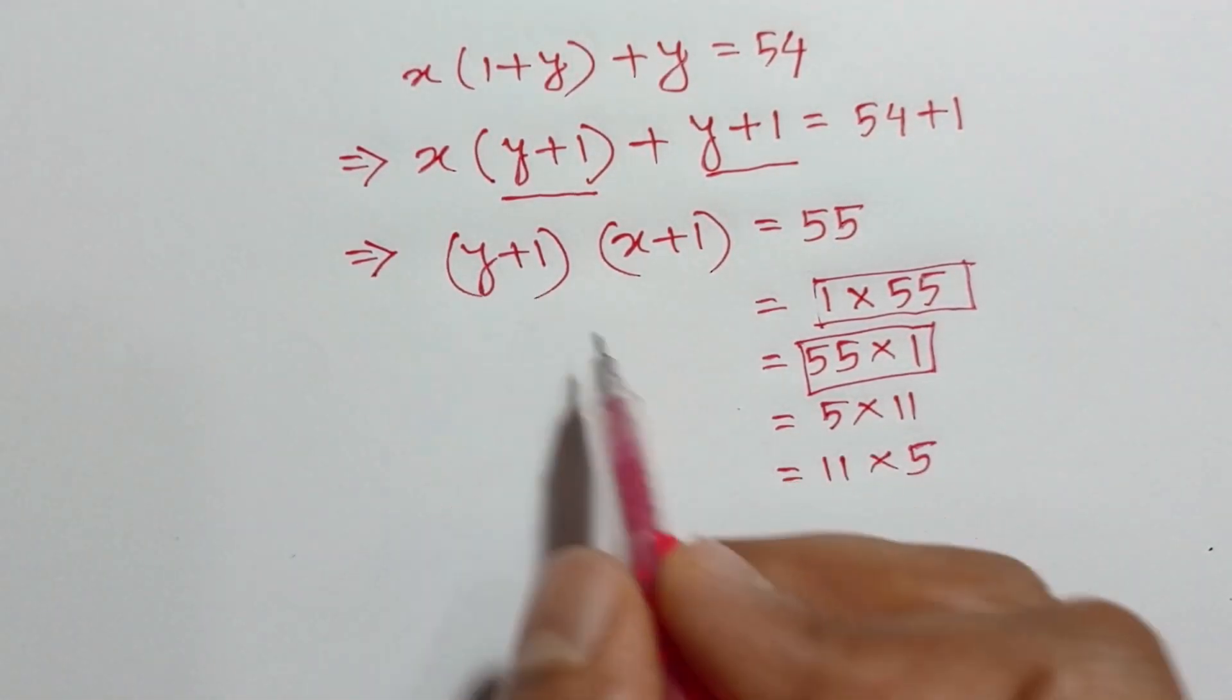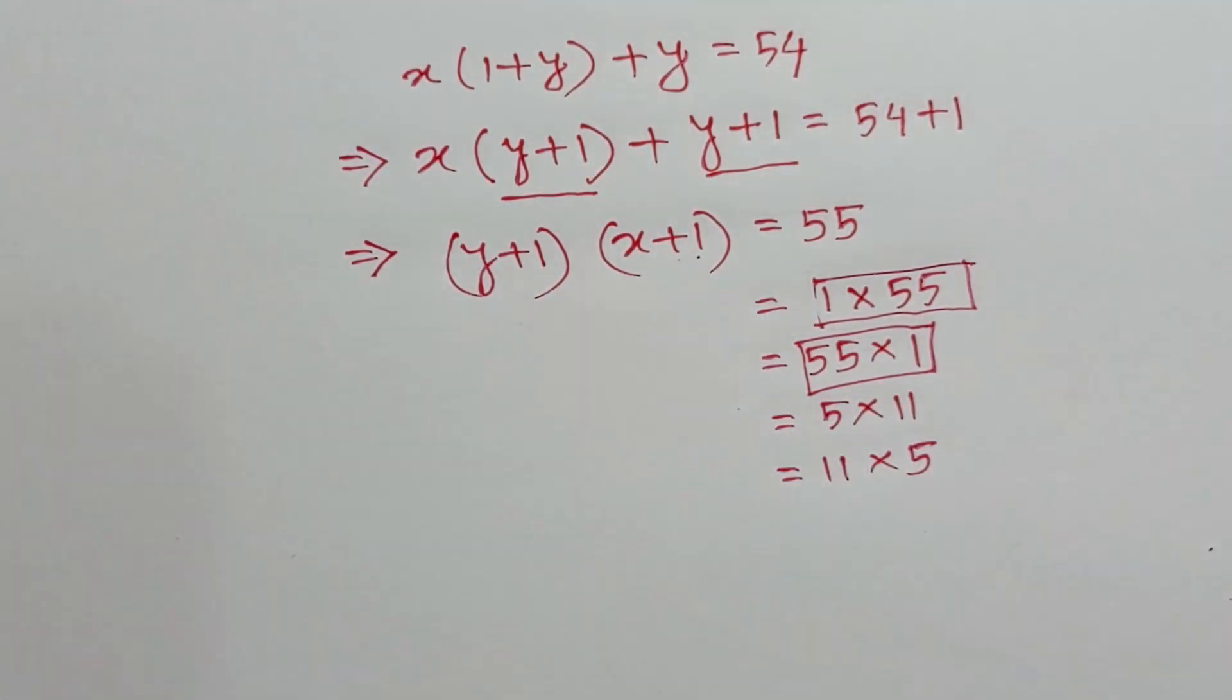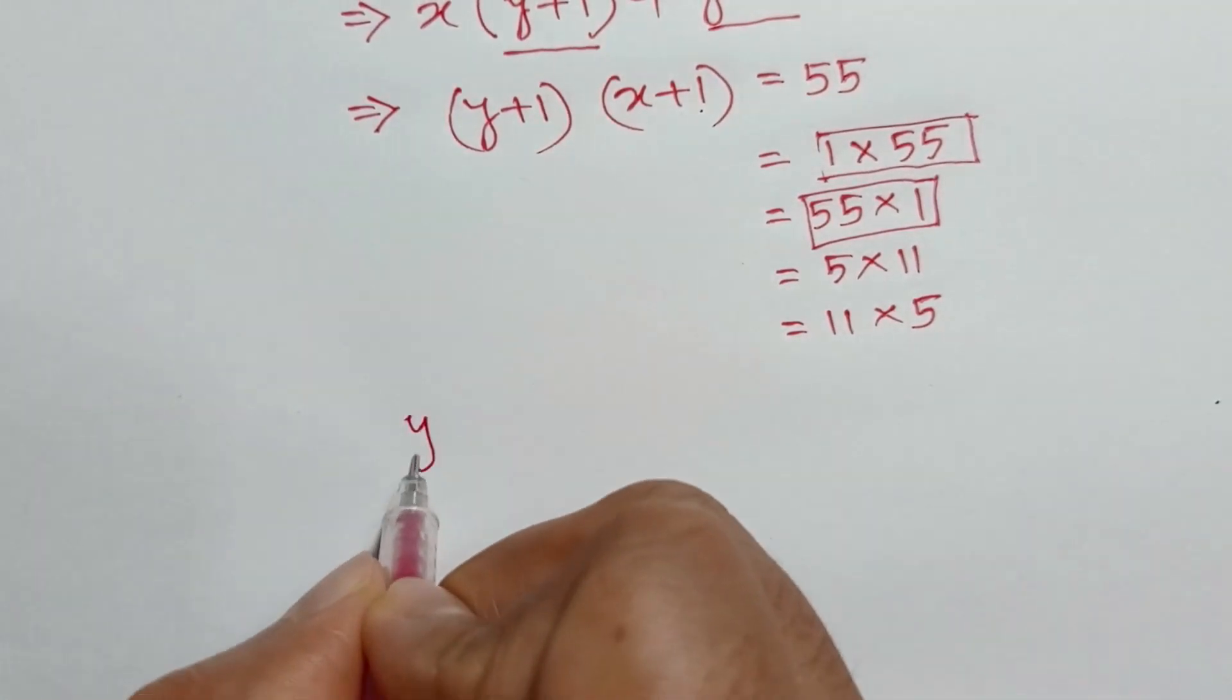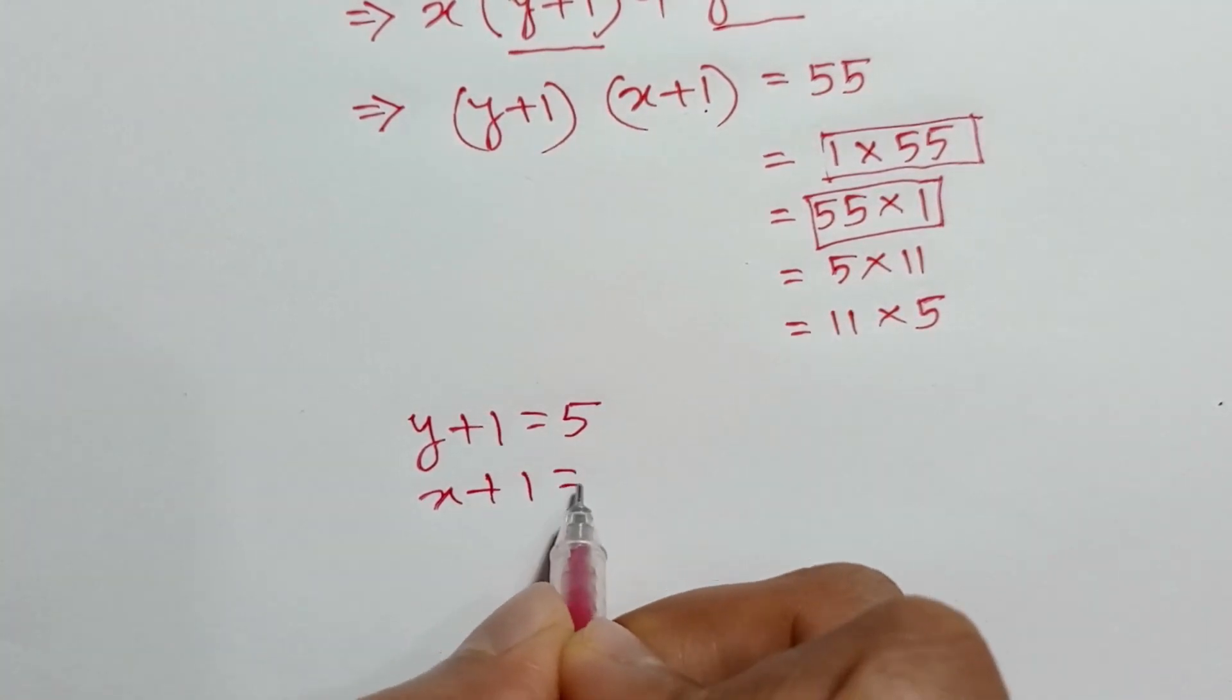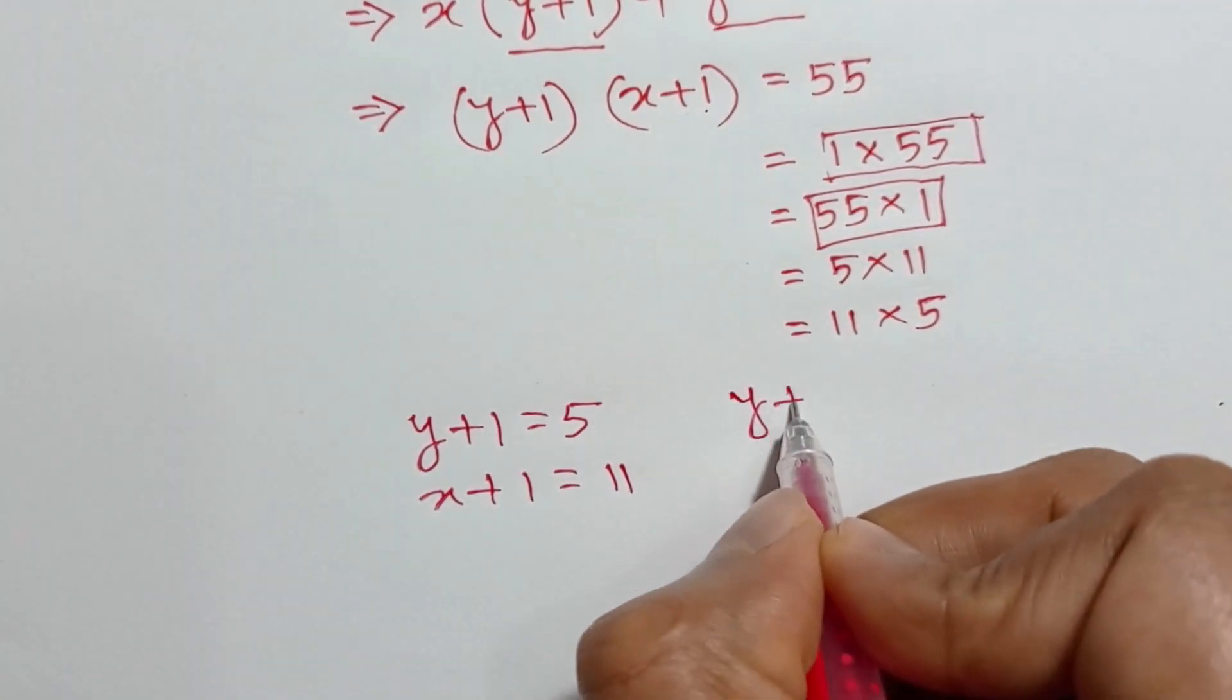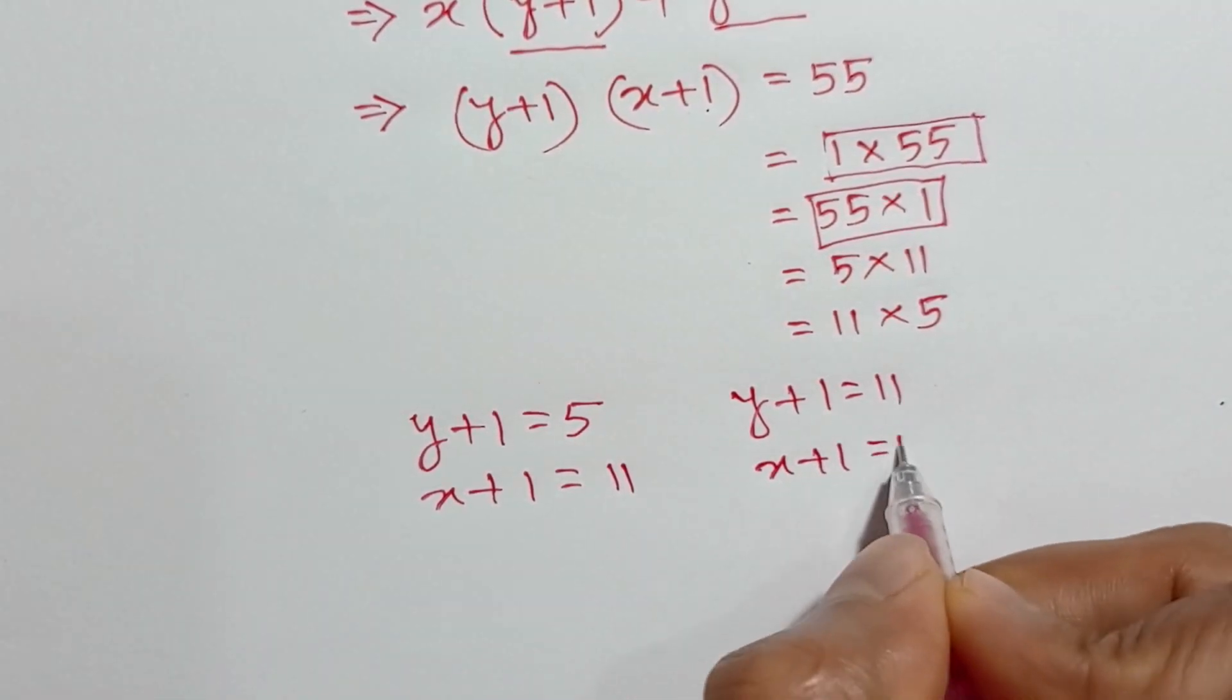So y plus 1 can be 5 and x plus 1 can be 11, or y plus 1 can be 11 and x plus 1 can be 5. So we can write: y plus 1 is equal to 5 and x plus 1 is equal to 11, or y plus 1 is equal to 11 and x plus 1 is equal to 5.